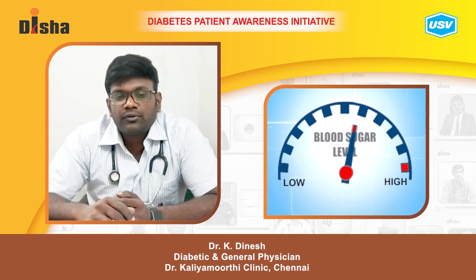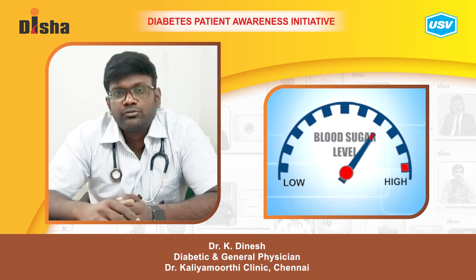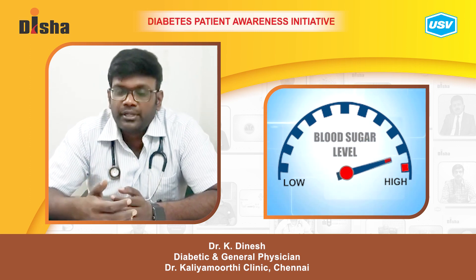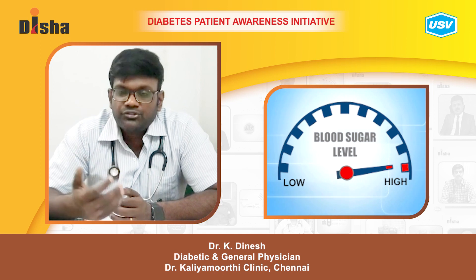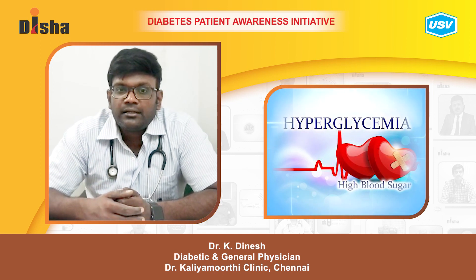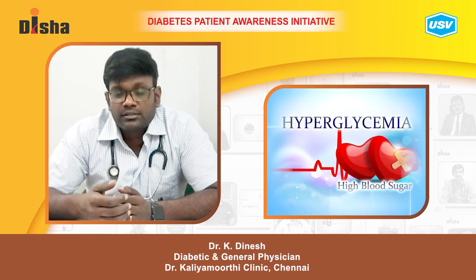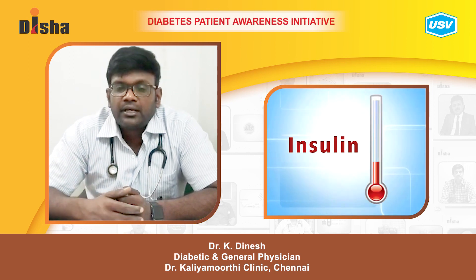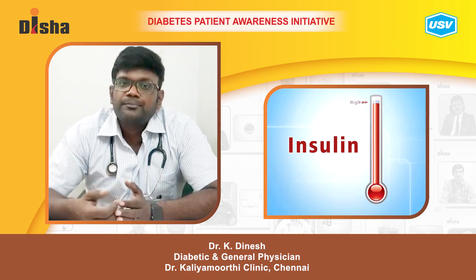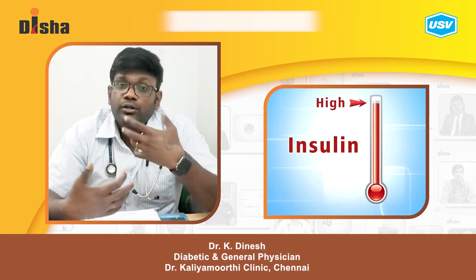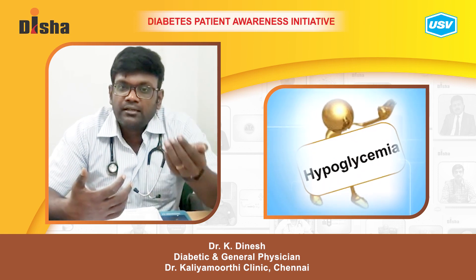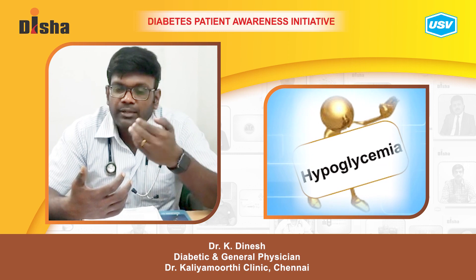If the patient does not administer insulin properly, blood sugar can shoot up to a higher level, causing a hyperglycemic effect. On the other hand, if the patient gives an overdose of insulin, that leads to hypoglycemia.